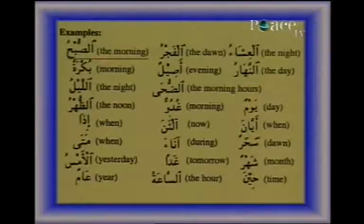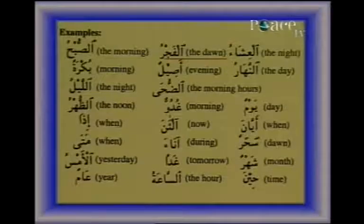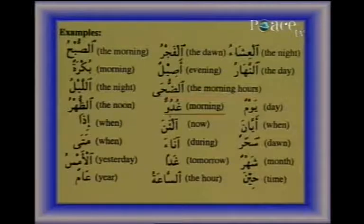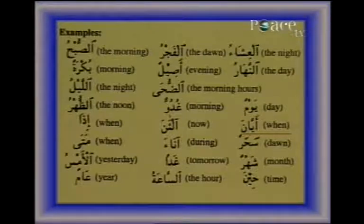Examples of adverbs of time: As-subh (the morning), Bukrah (morning), Al-layl (the night), Al-luhur (the noon), Idha (when), Mata (when), Al-ams (yesterday), Aam (year), Al-fajr (the dawn), As-seel (evening), Al-duha (the morning hours), Ghudu (morning), Al-an (now), Aana (during), Ghadan (tomorrow), As-sa'ah (the hour), Al-isha (the night), Al-nahar (the day), Yawm (day), Ayaan (when), Sahar (dawn), Shahr (month), Heen (time). Rule number 86.